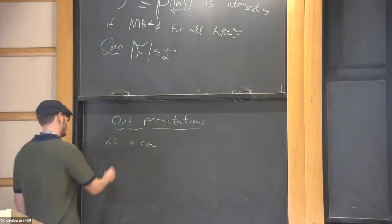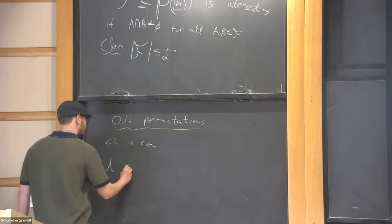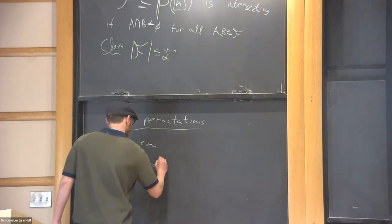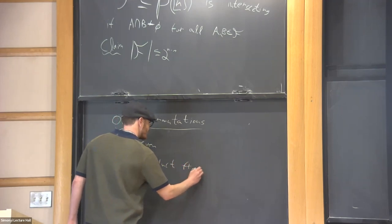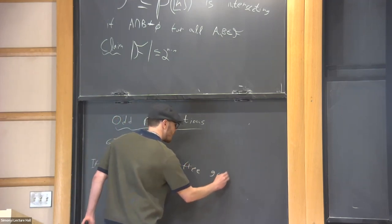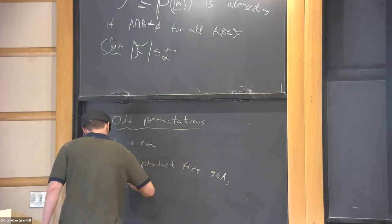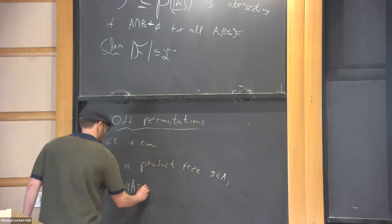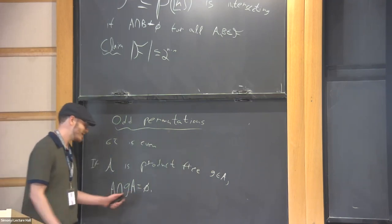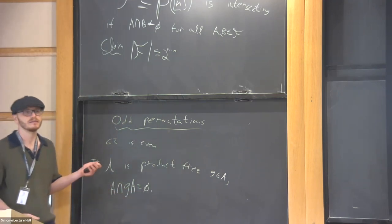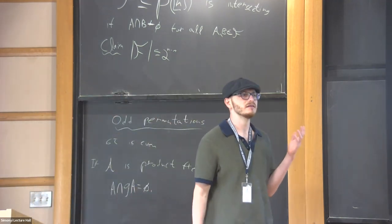On the other hand, if A is product-free and g is in A, then A and gA are disjoint. This means A has size at most one-half the group, and hence the odd permutations are the largest product-free set in the symmetric group.